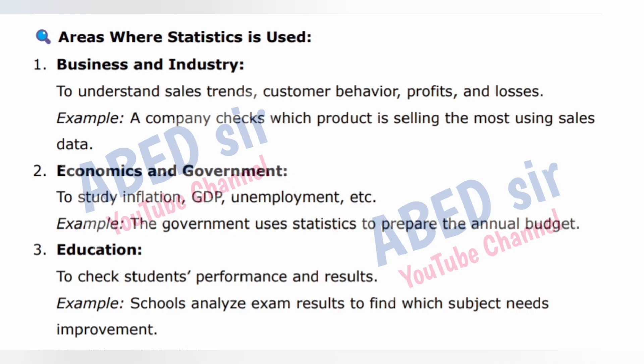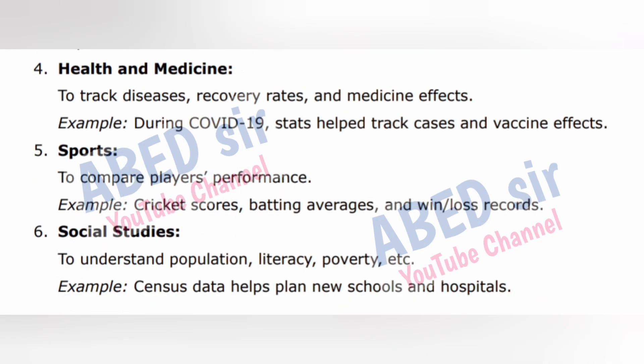Area 2: Economics and government — to study inflation, GDP, unemployment, etc. Example: The government uses statistics to prepare the annual budget. Area 3: Education — to check students' performance and results. Example: Schools analyze exam results to find which subject needs improvement. Area 4: Health and medicine — to track diseases, recovery rates, and medicine effects. Example: During COVID-19, statistics helped track cases and vaccine effects.